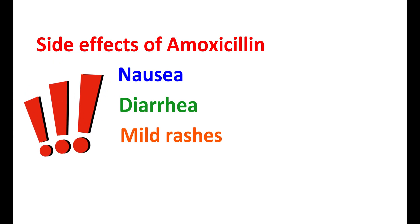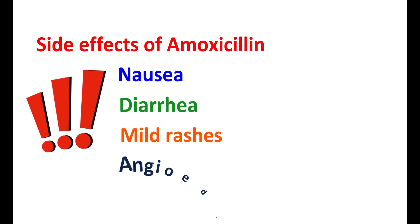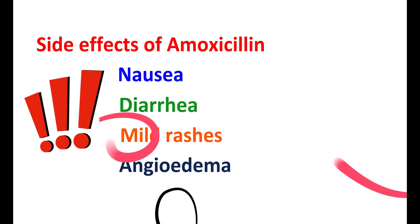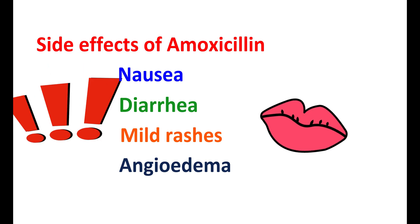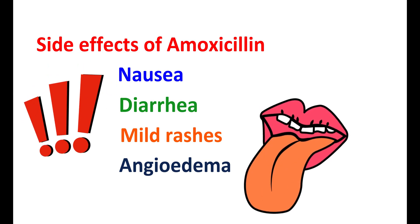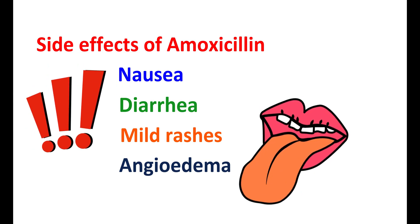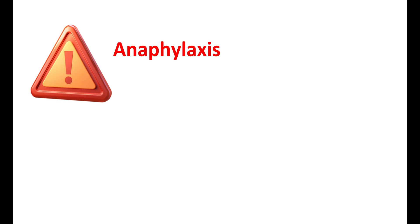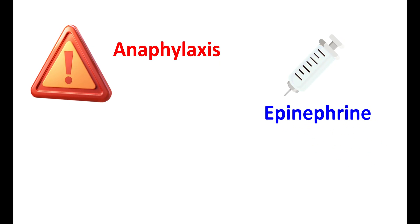In a few people, amoxicillin can also produce angioedema, leading to swelling of the lips, tongue, and pharynx. It also produces hives on the skin. Even though rare, it can produce anaphylaxis, which is a life-threatening reaction to penicillins. In case of any allergic reactions, epinephrine may be given to control these effects.